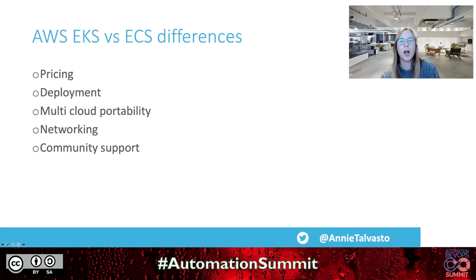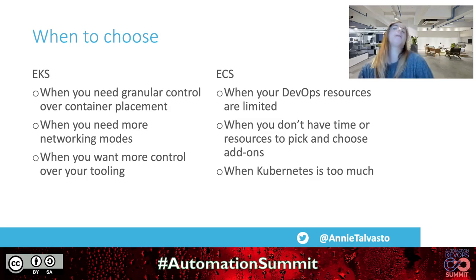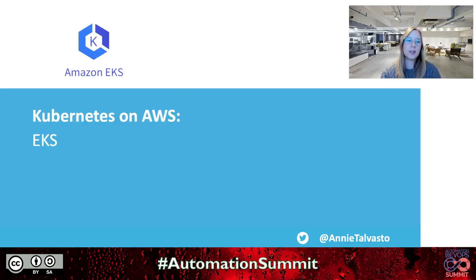Choose EKS when you need granular control over container placement, more networking modes, and more control over tooling. Choose ECS when your DevOps resources are limited, when you don't have time to pick and choose add-ons, or when Kubernetes is just too much to handle right now. As someone excited about Kubernetes, my recommendation is usually to go with EKS for the freedom the open-source community and tooling provide.